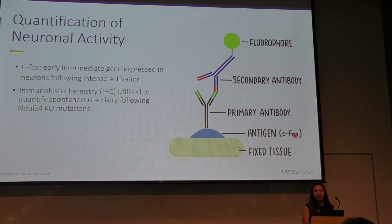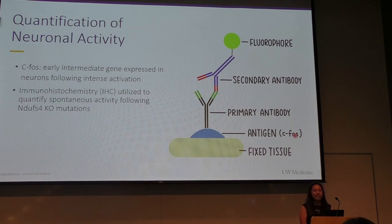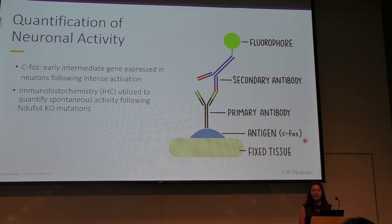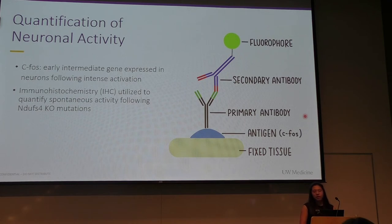To quantify the amount of neural activity present in mouse brain tissue, we utilized immunohistological techniques in which the cFOS protein was labeled. cFOS is an immediate early gene expressed in neurons following intense activation, and is related to signal cascades involved in neuronal plasticity and cell burden. In this experiment, cFOS was utilized to quantify spontaneous activity 30 minutes prior to perfusion, following NDUFS4 knockout mutations in excitatory and inhibitory neurons. The figure on the right shows a general schematic of how the immunohistochemistry worked — we used a series of antibodies, a primary and secondary antibody, to attach a fluorescent molecule called a fluorophore to the antigen, which in this case was cFOS.